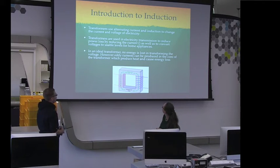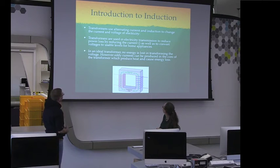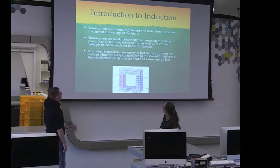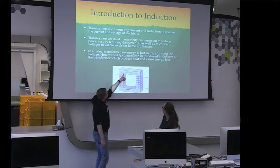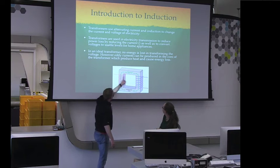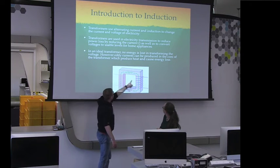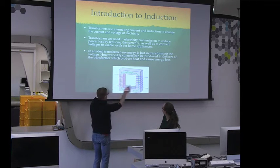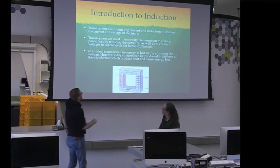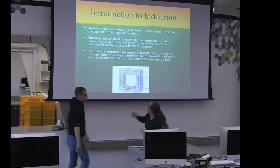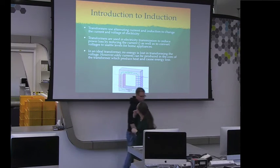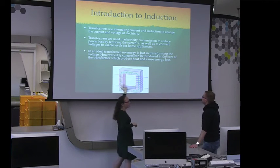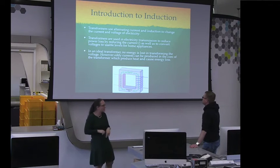However, eddy currents can be produced in the core of the transformer, which produce heat and cause energy loss. And you can see that... So here you see there is a flux and you have the primary and secondary coil here and then that sort of generates the different voltages. But I think Liz will go into more detail for that. Yes, I think that the equation which got left off there was about the number of turns of these two and the relationship between that and the voltage.